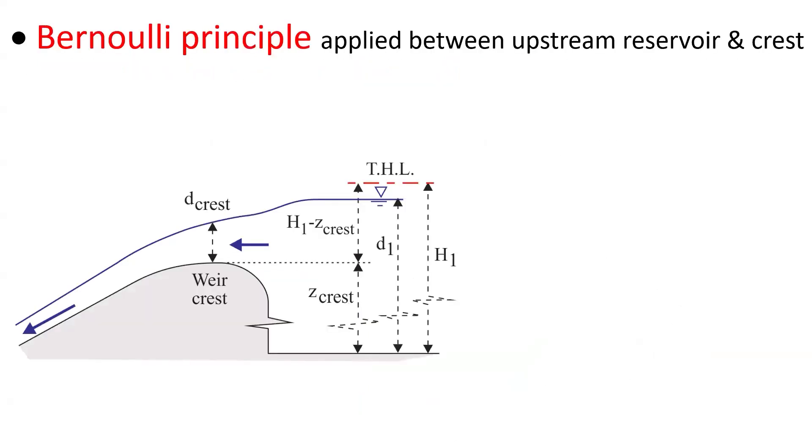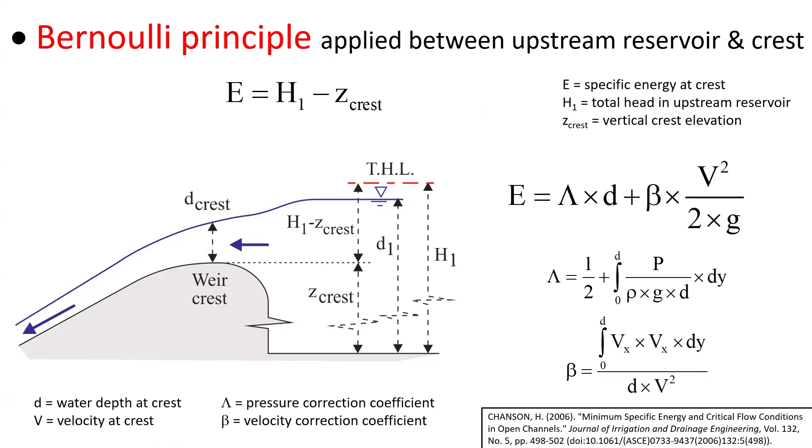The Bernoulli principle is applied between the upstream reservoir and the spillway crest, and it states that the specific energy at the crest equals the upstream total head, basically the upstream reservoir elevation minus the crest elevation, with the depth at very large specific energy being equal to lambda times d plus beta times v squared over 2g, where lambda is a pressure correction coefficient and beta is a velocity correction coefficient. For hydrostatic pressure distribution, lambda equals 1. For uniform velocity distribution, beta equals 1.